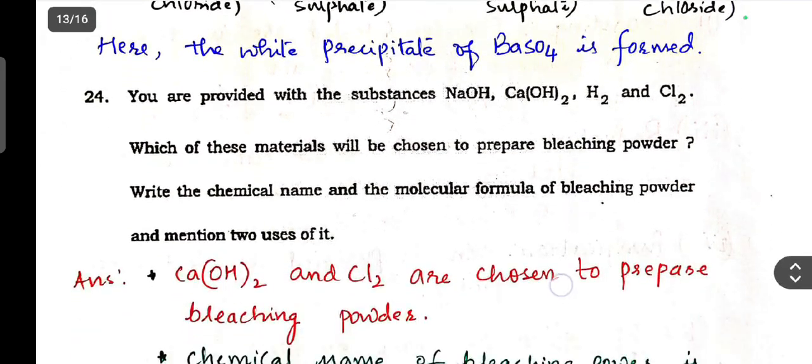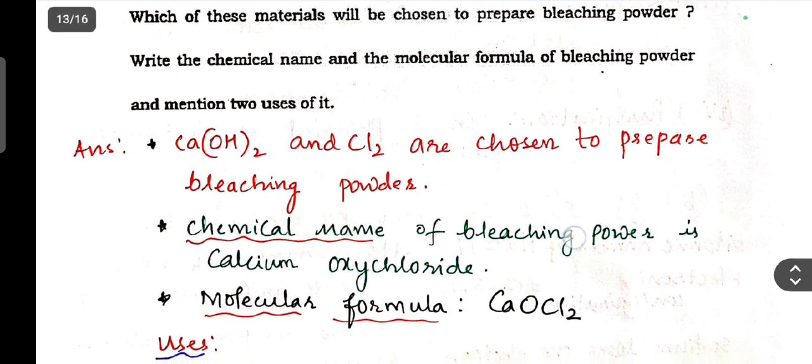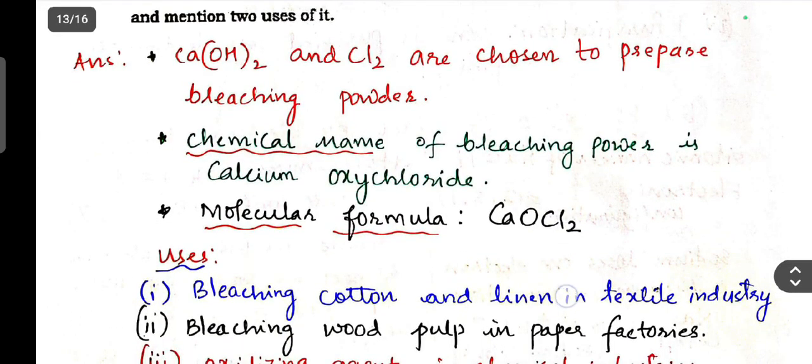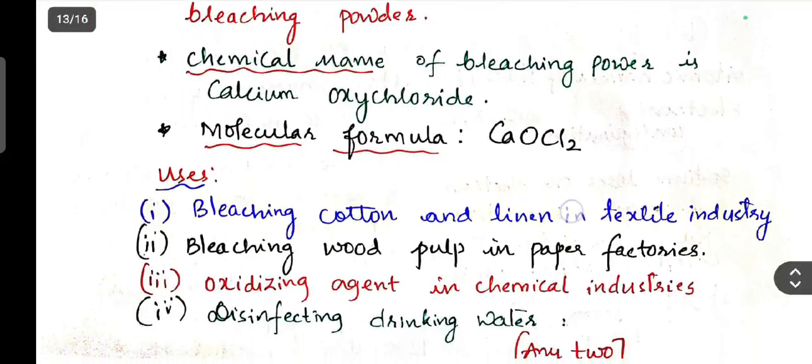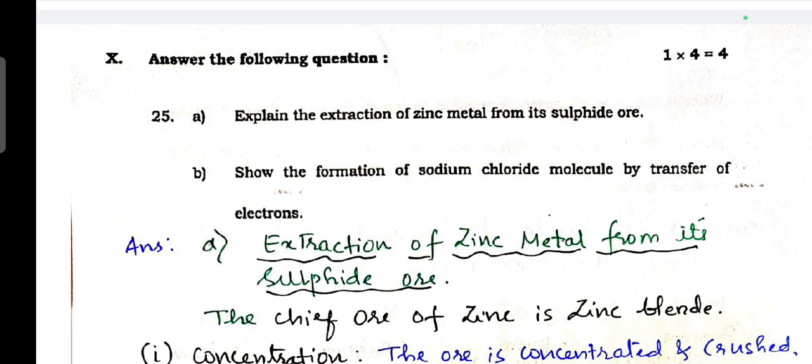Question number 24. You are provided with substances: NaOH, Ca(OH)2, H2, and Cl2. Which of these materials will be chosen to prepare bleaching powder? Write the chemical name and molecular formula for bleaching powder. Enumerate any two uses of bleaching powder.